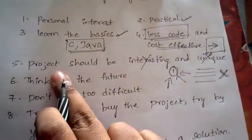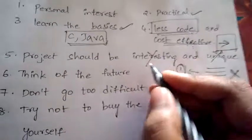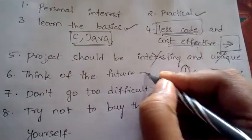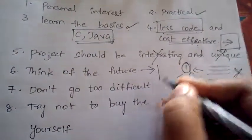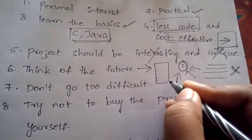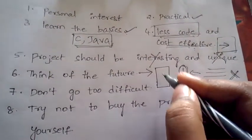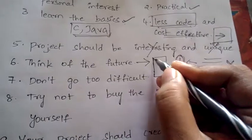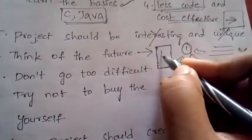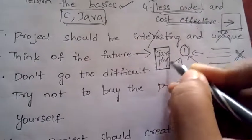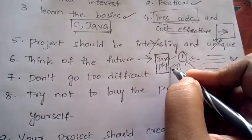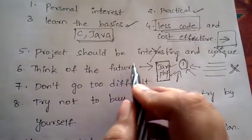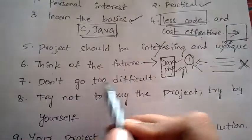Next, think of the future. The project you do should help in your job as well. Do similar kinds of projects that help even in the future — do projects on Java, PHP, and other emerging technologies. Don't use old or outdated technologies. Think about the future and then select your project.